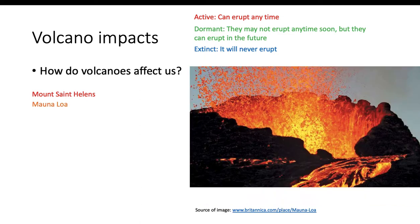The next one I want to talk about is Mauna Loa. Mauna Loa is in Hawaii on the Big Island, in Hawaii Volcanoes National Park — I've actually been there. Mauna Loa has killed people, but most who die from it are dying because of the harmful gases it produces. Mauna Loa is formed from a hot spot — Hawaii actually formed from a hot spot too.